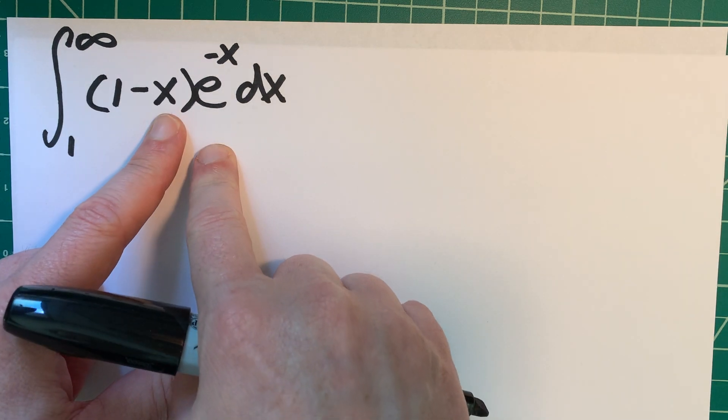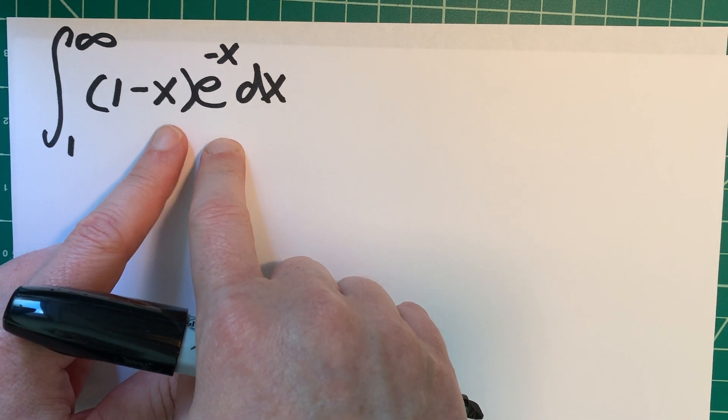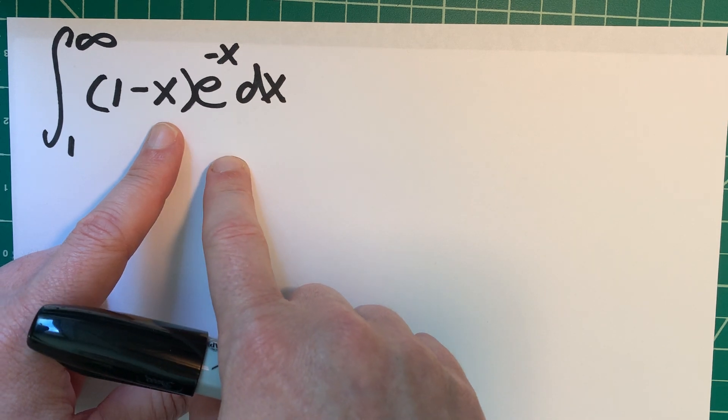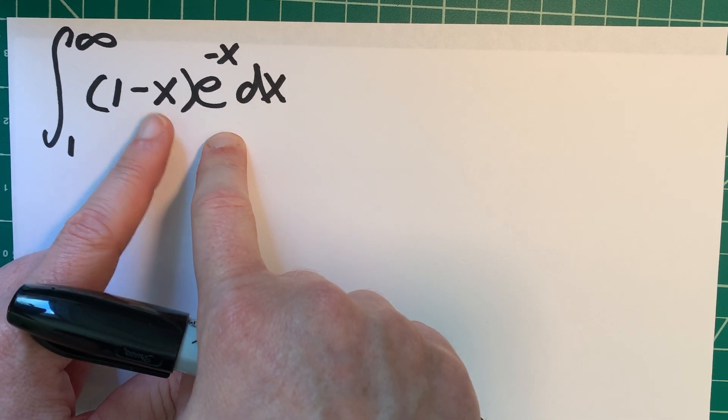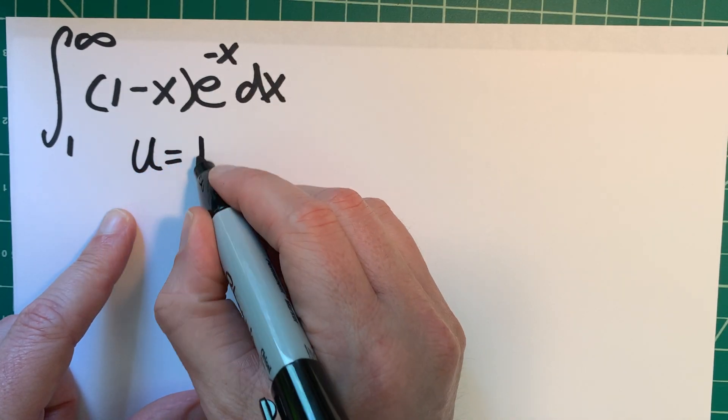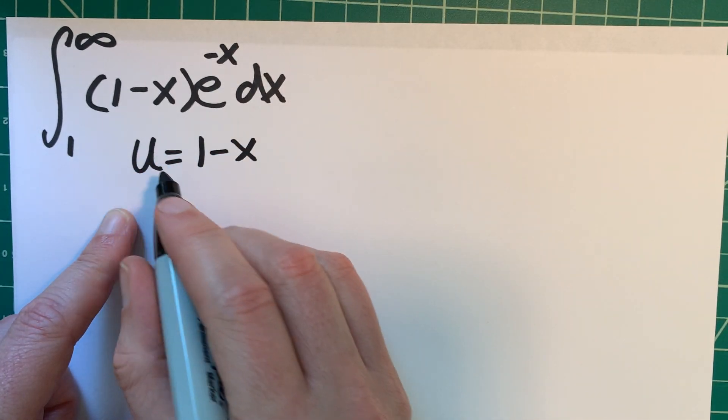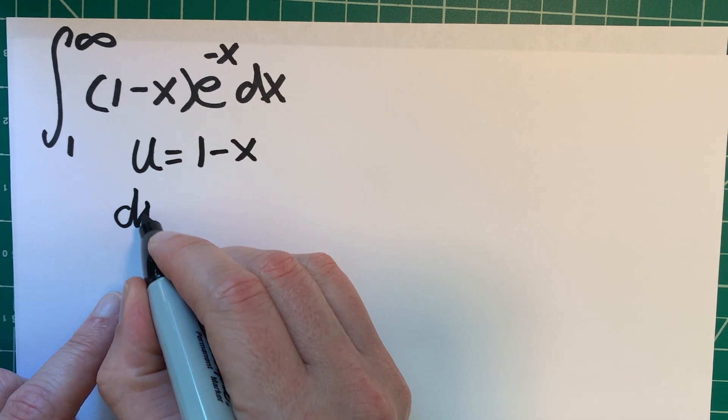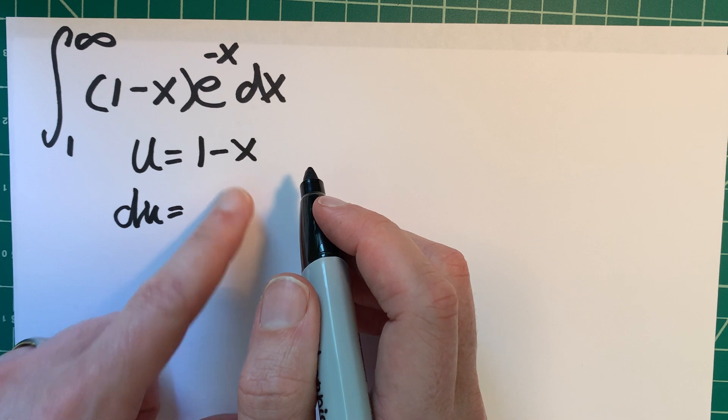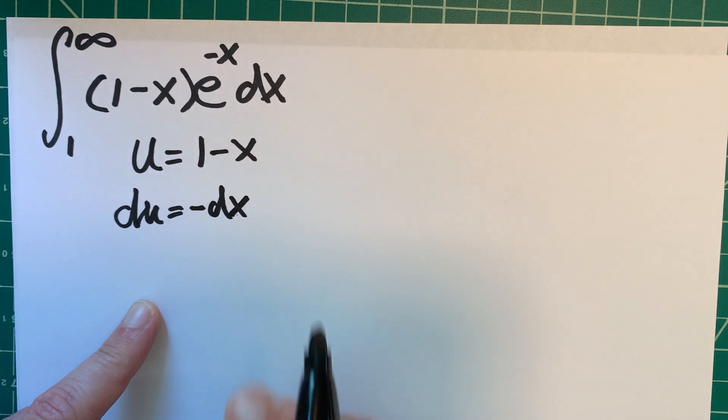So then you have lots of different choices of what you're going to choose for your u and for your dv. I think I'm going to try this as my u. Because if I do that, du will just become negative 1, and that would be negative dx.